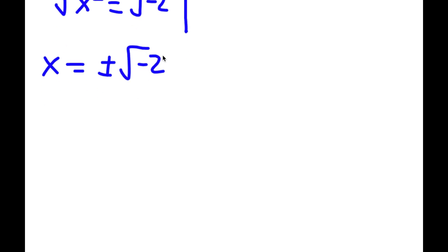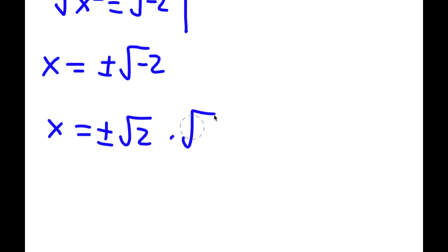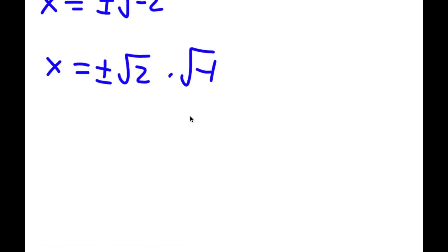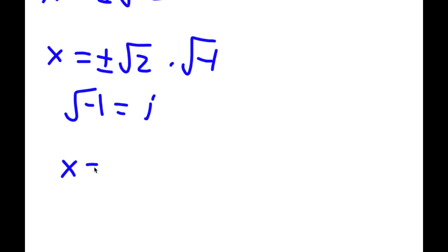The square root of negative 2 I can rewrite as the square root of 2 times the square root of negative 1. And the square root of negative 1 is equal to the imaginary number i. So I have x is equal to plus or minus the square root of 2 times i.